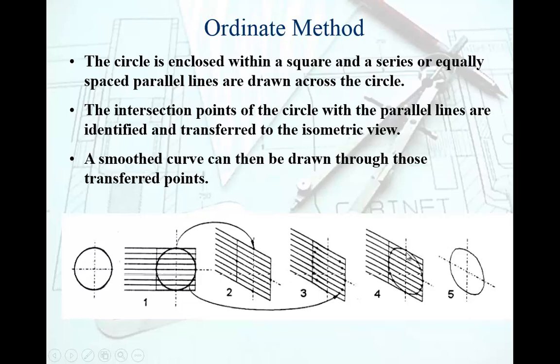What you need to do after this is using a continuous thin line to start with, join all of those intersections. That gives you a sort of locus of all those intersections and that in a sense is a circle in isometric view.